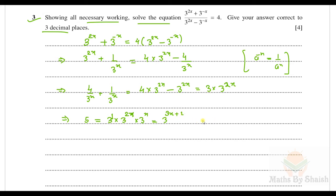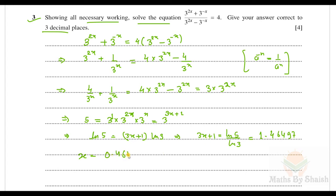Taking the natural log of both sides: ln 5 = (3x+1)·ln 3, so 3x+1 = ln5/ln3 ≈ 1.46497. Therefore x = (1.46497−1)/3 = 0.46497/3 ≈ 0.155.